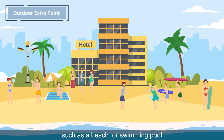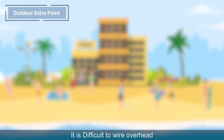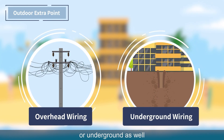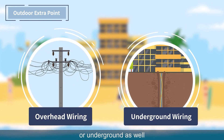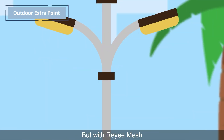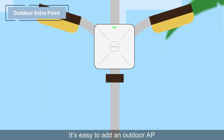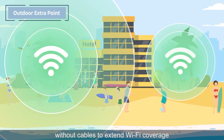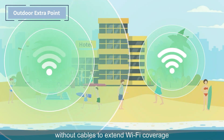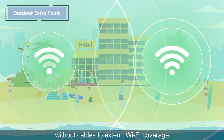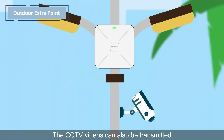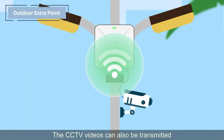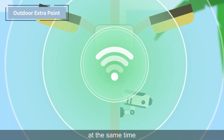For outdoor spaces such as a beach or swimming pool, it is difficult to run wiring overhead or underground as well. But with Ray-E Mesh, it is easy to add an outdoor AP without cables to extend Wi-Fi coverage. CCTV video can also be transmitted at the same time.